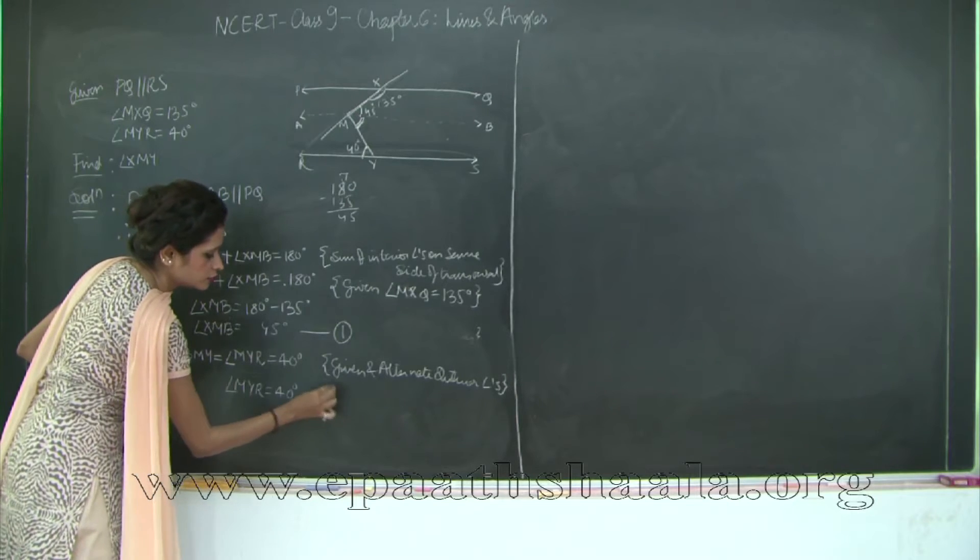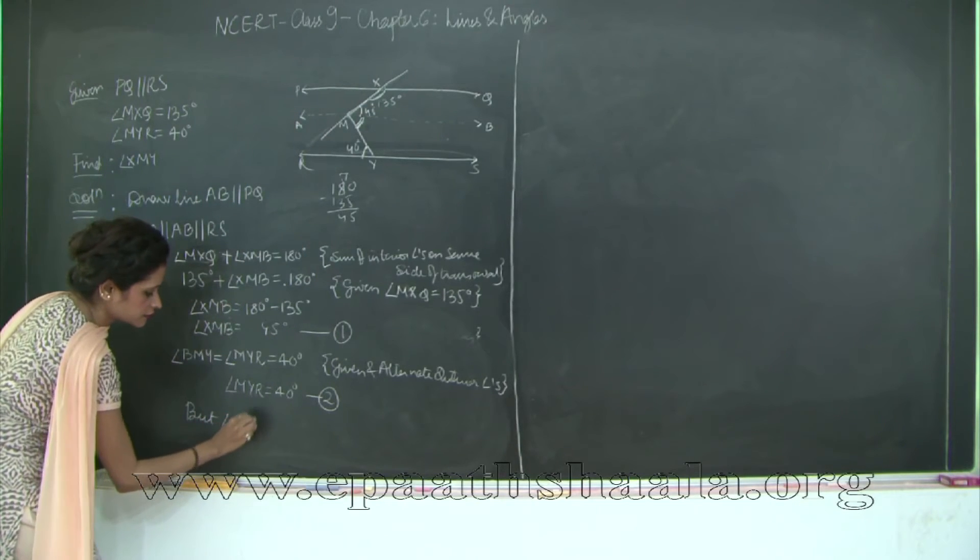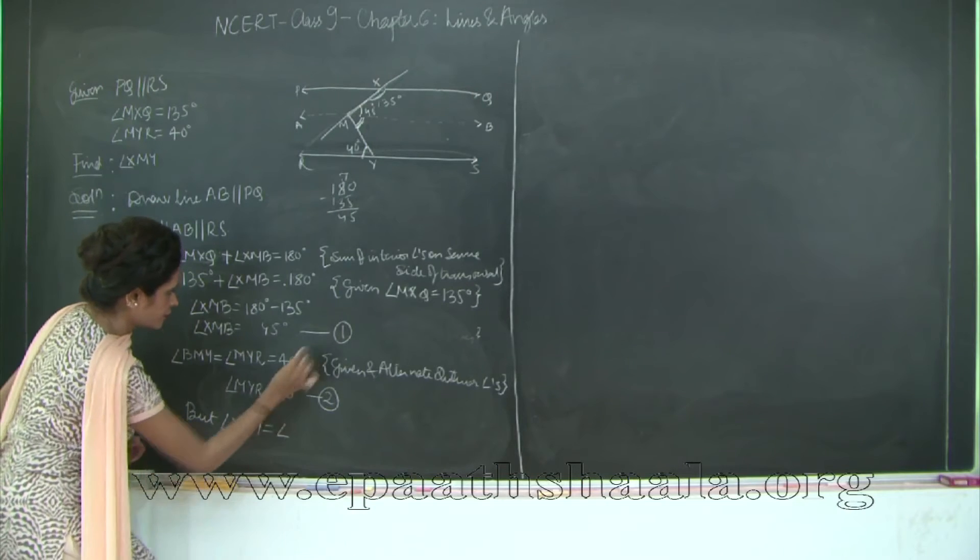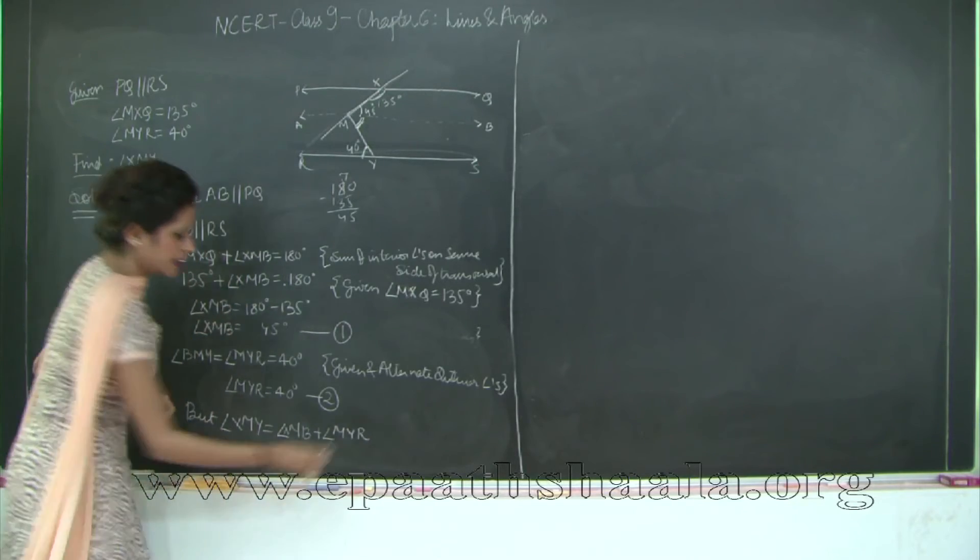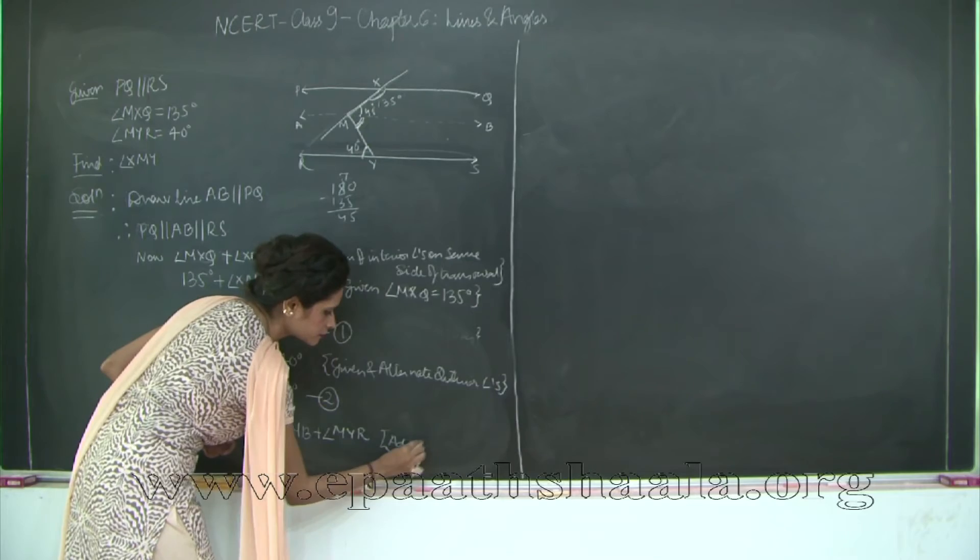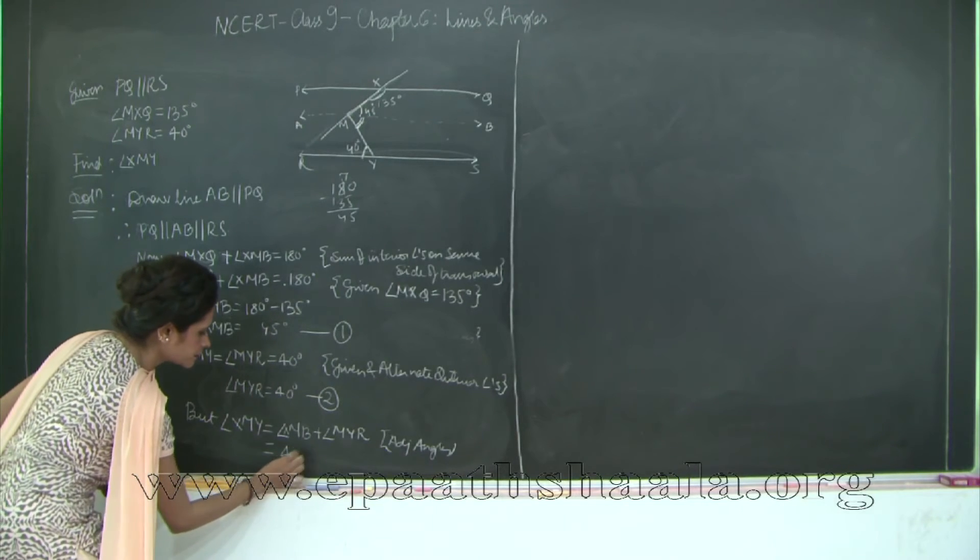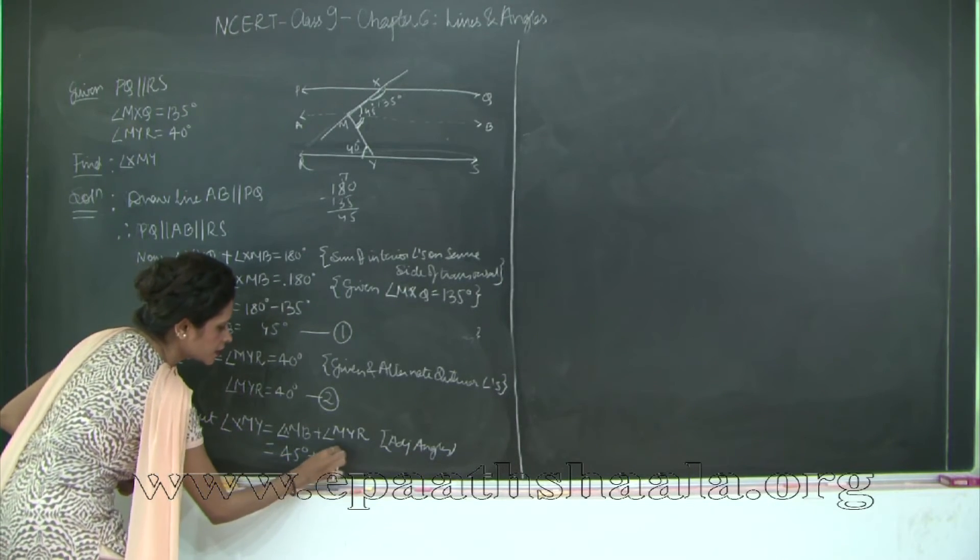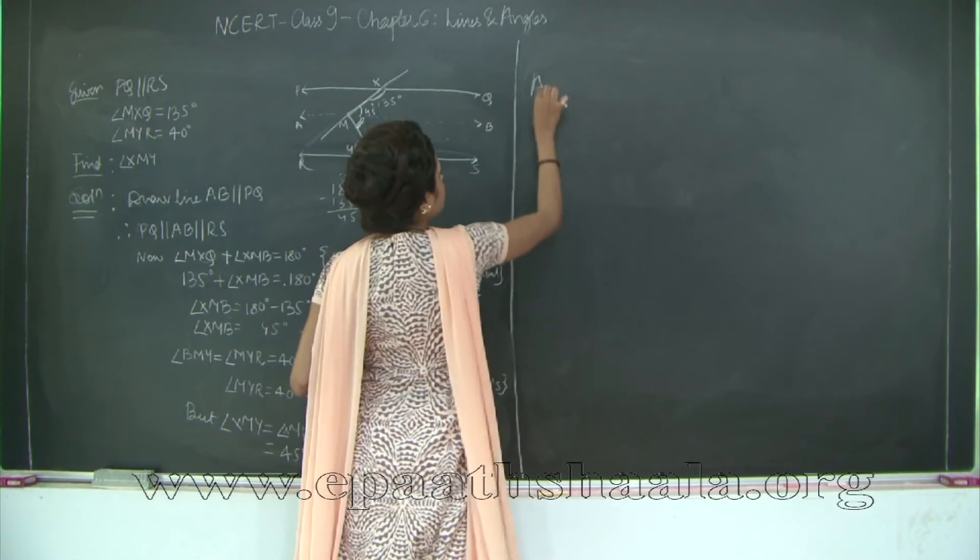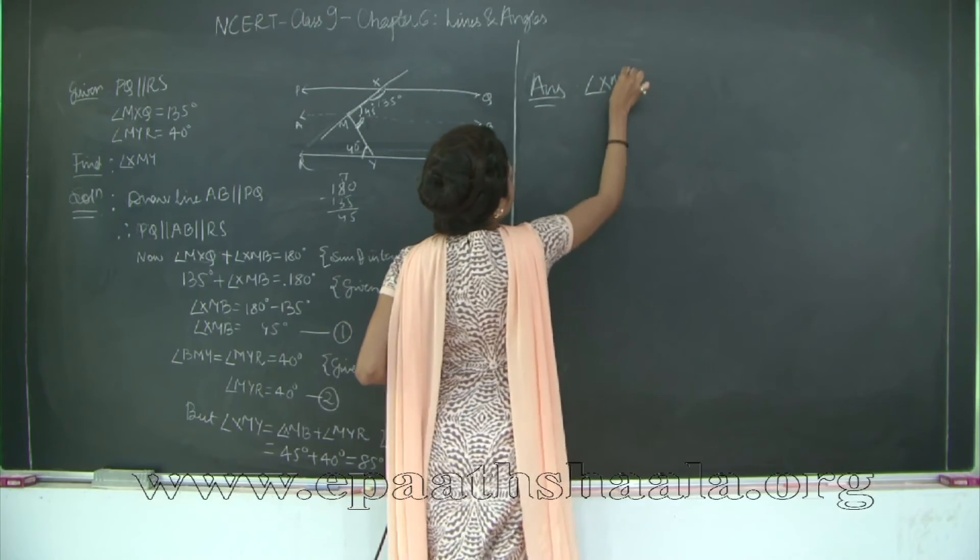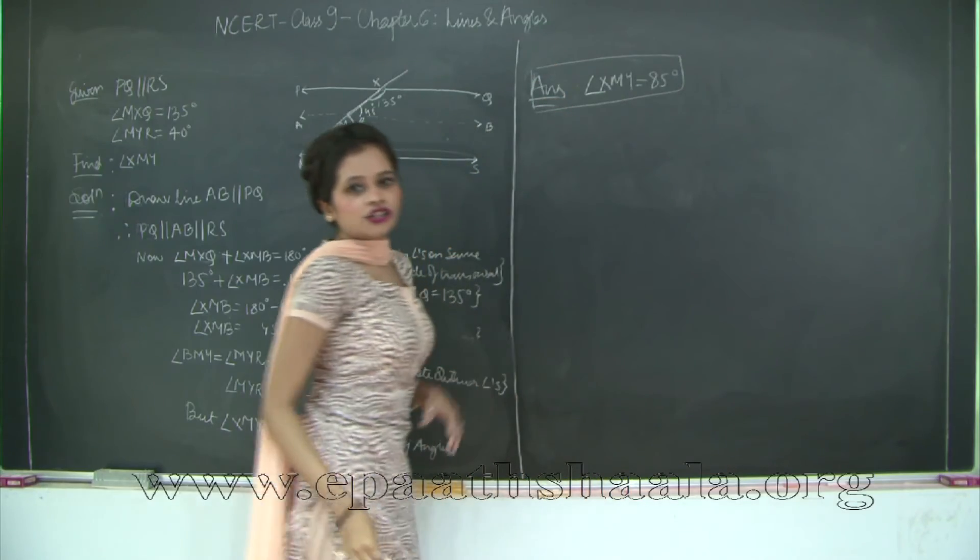Now, from 1 and 2, angle XMY is equal to angle XMB plus angle BMY. Why? Because they are adjacent angles. Therefore, it is going to be 45 degrees plus 40 degrees, which is equal to 85 degrees. Answer: angle XMY is equal to 85 degrees.